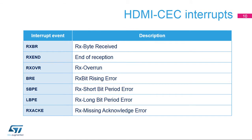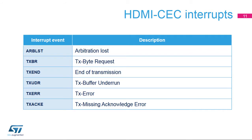Here is an overview of HDMI CEC reception interrupt events. An interrupt can be produced during reception if a receive block transfer is finished, or if a receive error occurs. Similarly, for transmission interrupt events, an interrupt can be produced during transmission if a transmission block transfer is finished, or if a transmit error occurs.